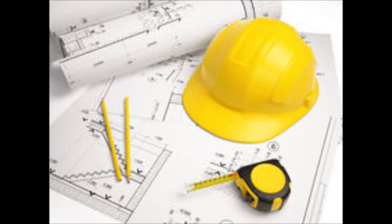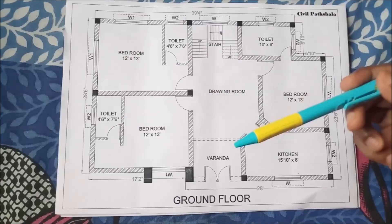Ask for the total cost and quotation. In the quotation, they will explain each and everything — like the materials that will be used for the whole process of construction. The next point is to make an agreement for the construction, cost, and the duration.